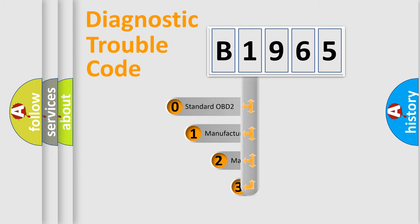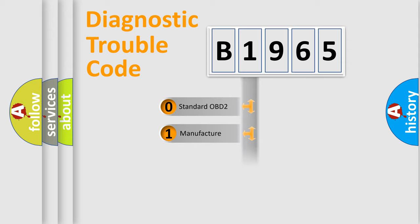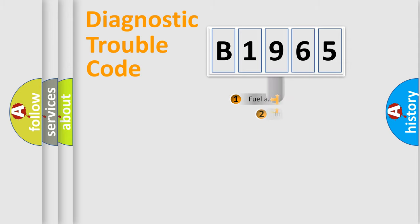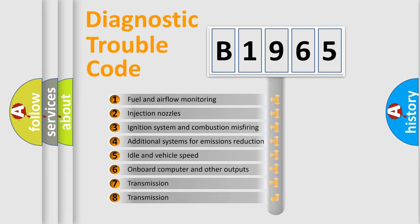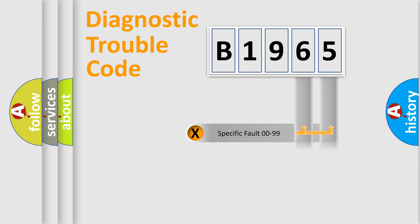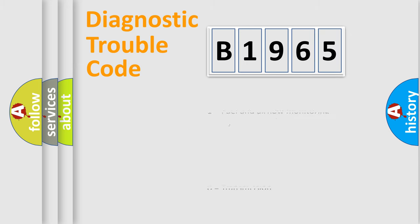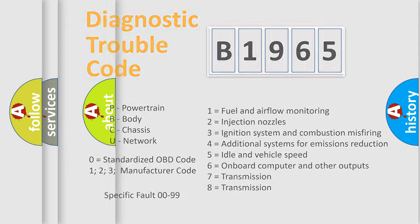This distribution is defined in the first character of the code. If the second character is expressed as zero, it is a standardized error. In the case of numbers 1, 2, or 3, it is a manufacturer-specific error. The third character specifies a subset of errors. This distribution is valid only for the standardized DTC code, where the second character is expressed by the number zero.